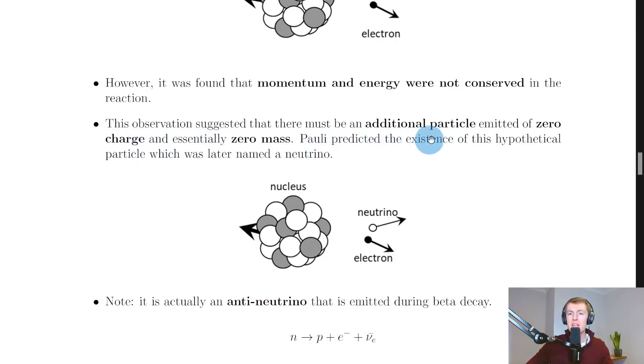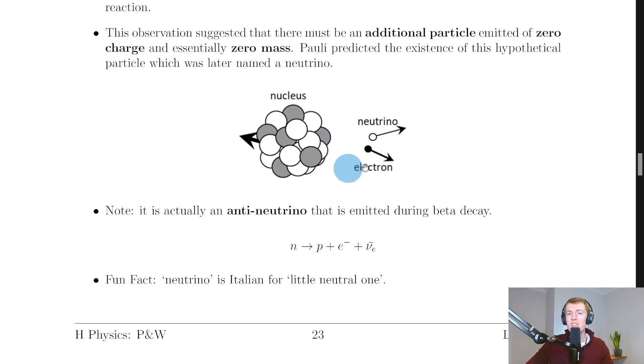Mass and charge were conserved, but momentum and energy were not conserved. This observation suggested that there must be an additional particle emitted of zero charge and essentially zero mass. Pauli predicted the existence of this hypothetical particle, which was later named a neutrino.